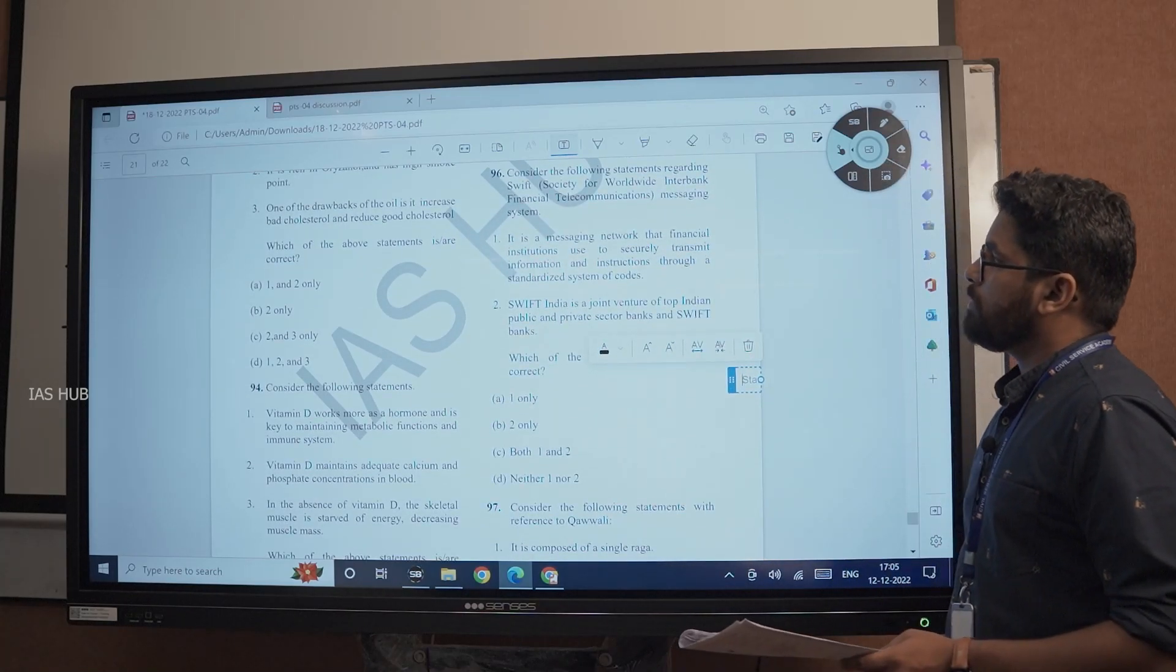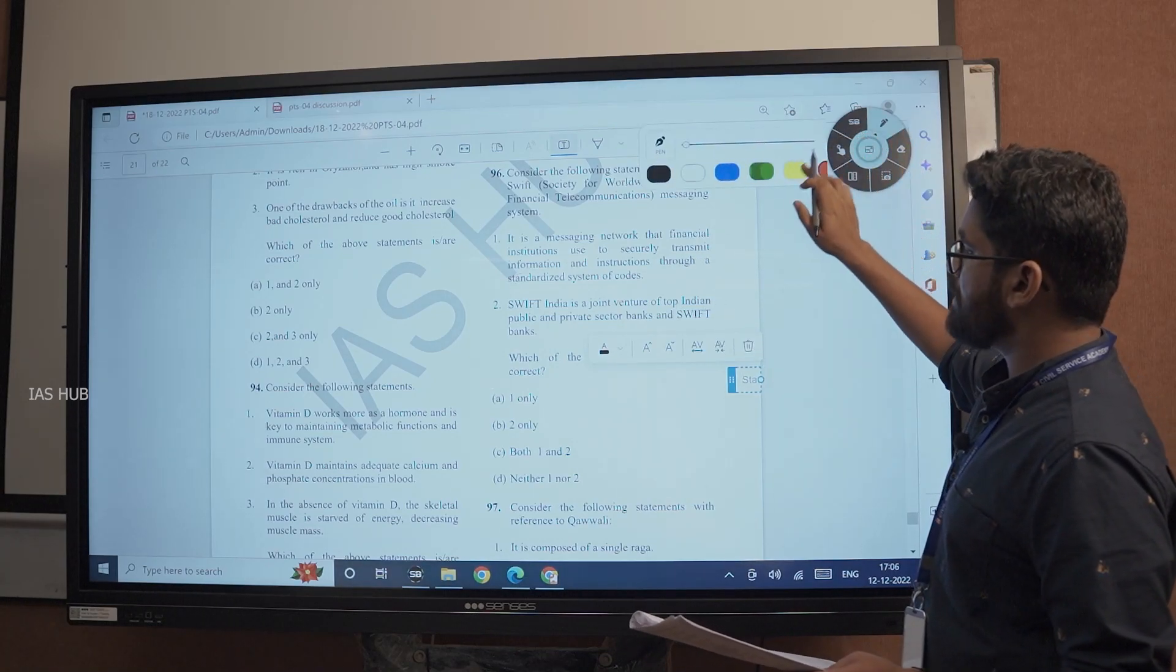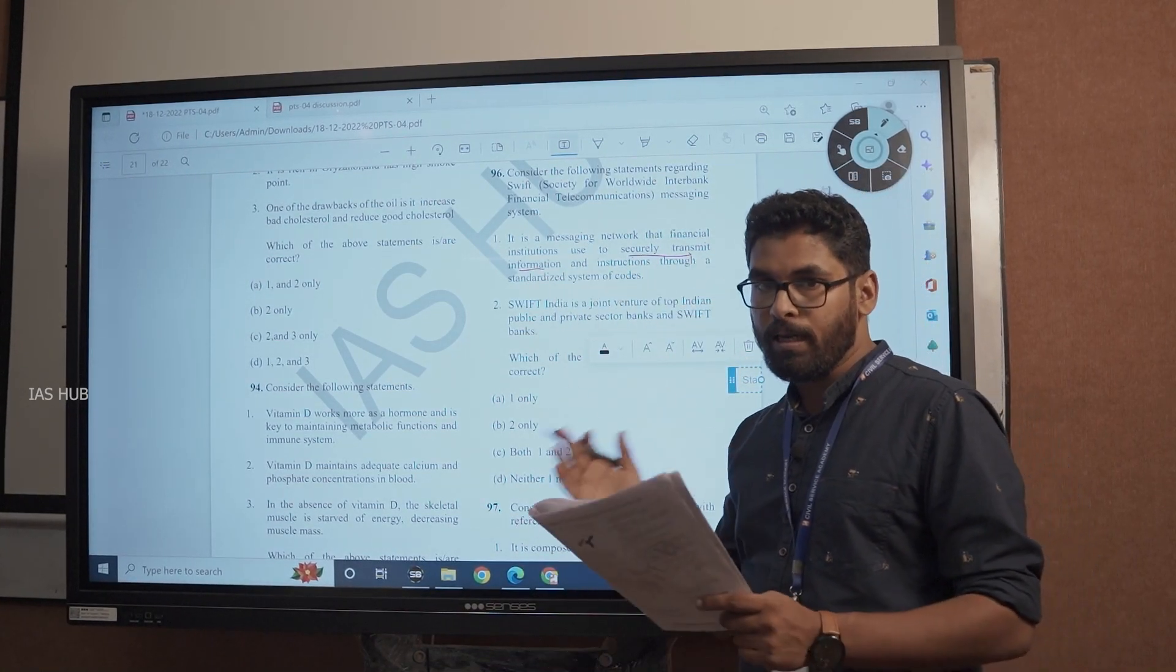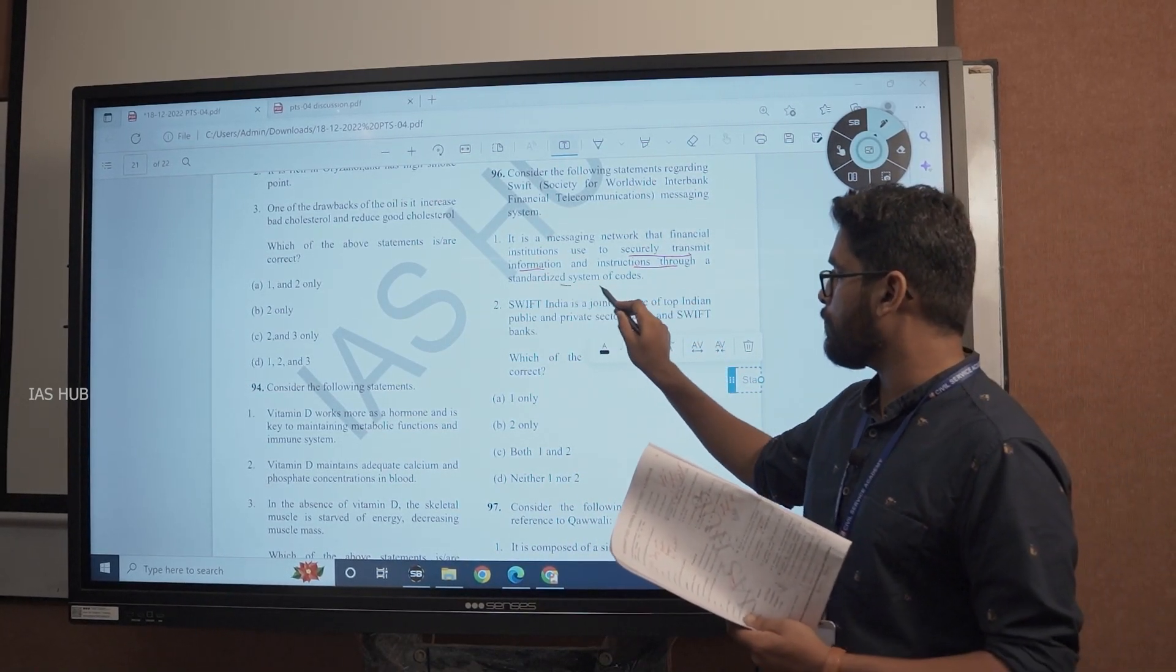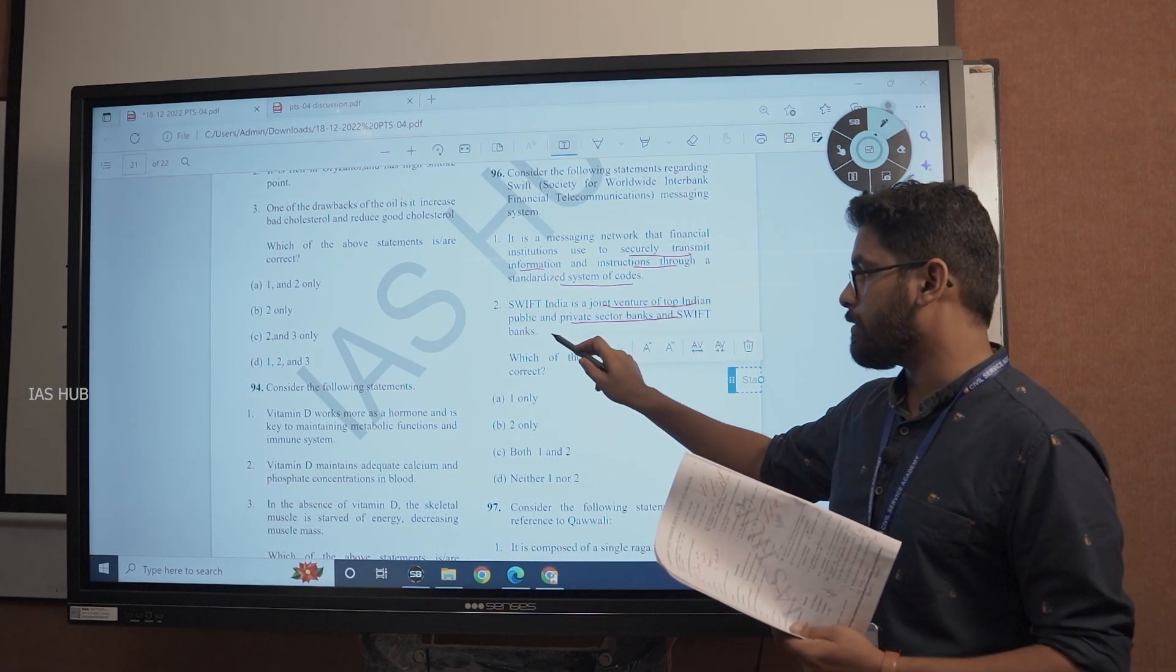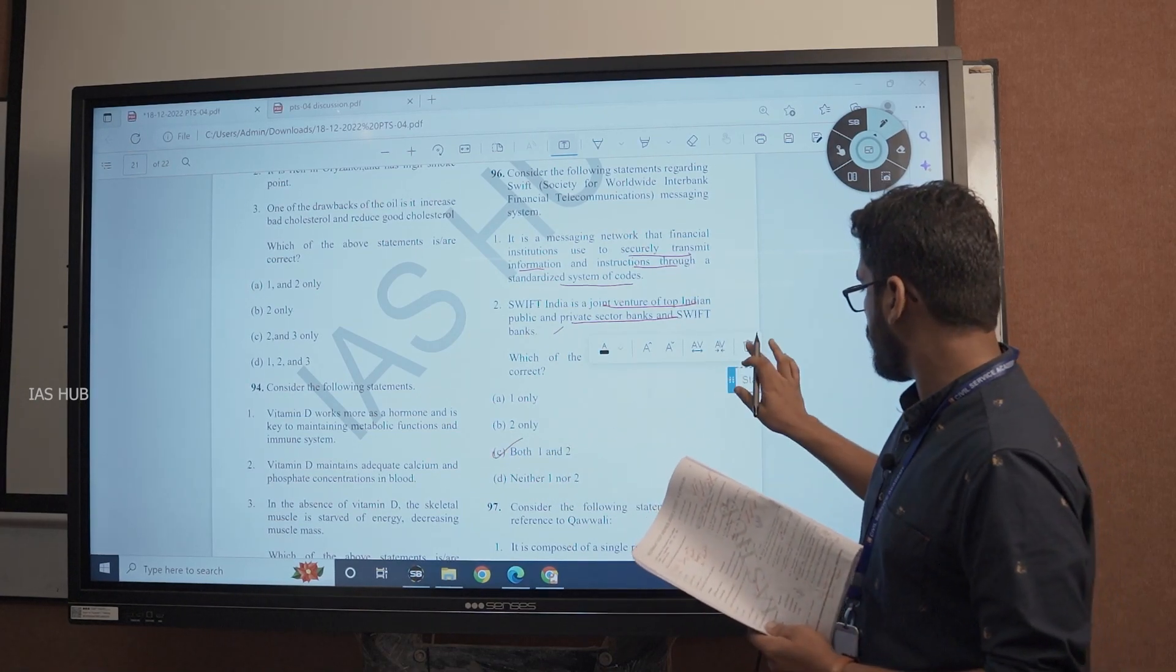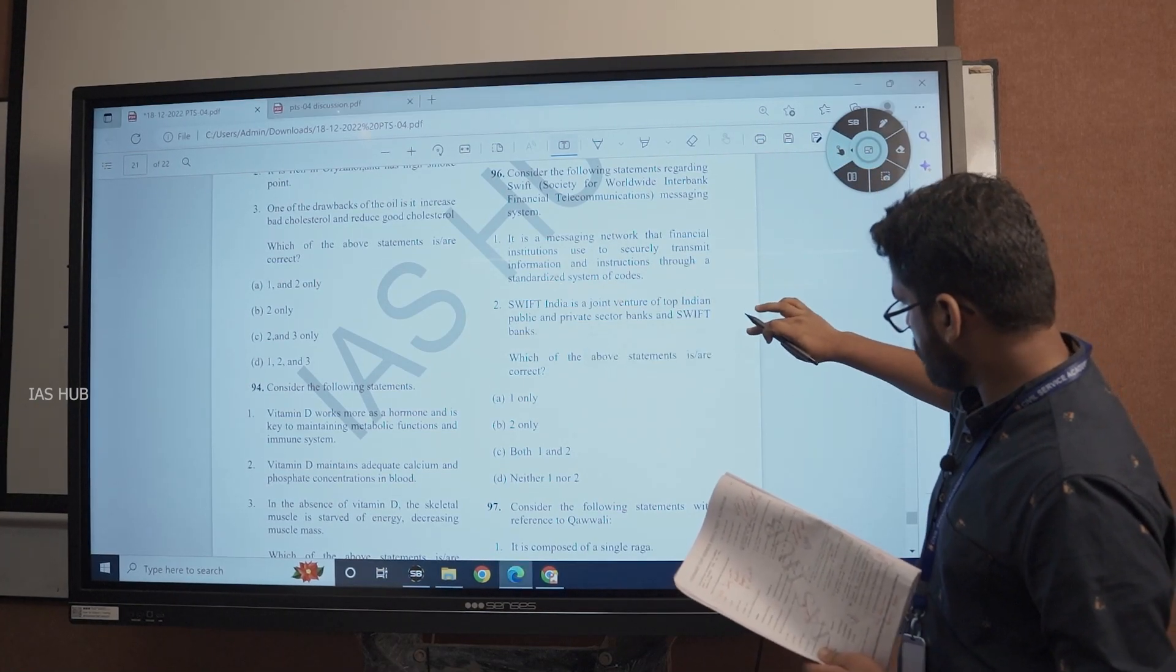Consider the following statements regarding Society for Worldwide Interbank Financial Telecommunications Messaging System. It is a messaging network that financial institutions use to securely transmit information. Not only transmit information, not money. They are not transferring money. They are just transferring information and instructions through a standardized system of codes. Swift India is a joint venture of top Indian public and private sector banks and Swift banks. Second statement is though little factual. Overall, both statements are correct.